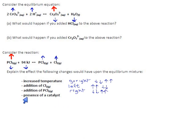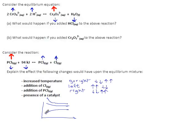The last one is a trick question. The presence of a catalyst doesn't do anything to an equilibrium mixture. If you have a reaction that is not at equilibrium, the presence of a catalyst means you will get to that equilibrium faster — these curves will reach their equilibrium level in less time. But the equilibrium level itself will be the same. And if the reaction is already at equilibrium, then it won't even care if you add a catalyst. So the presence of a catalyst does nothing to an equilibrium mixture.